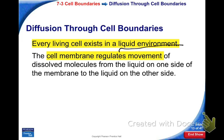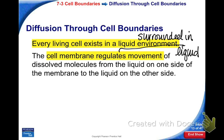Cells exist in a liquid environment. That doesn't mean all cells are floating in liquid — we aren't aquatic — but the cells inside of our body are surrounded in liquid. That liquid is usually water. So the cell membrane has to be able to regulate the movement, to control the movement of materials in and out of the cell.